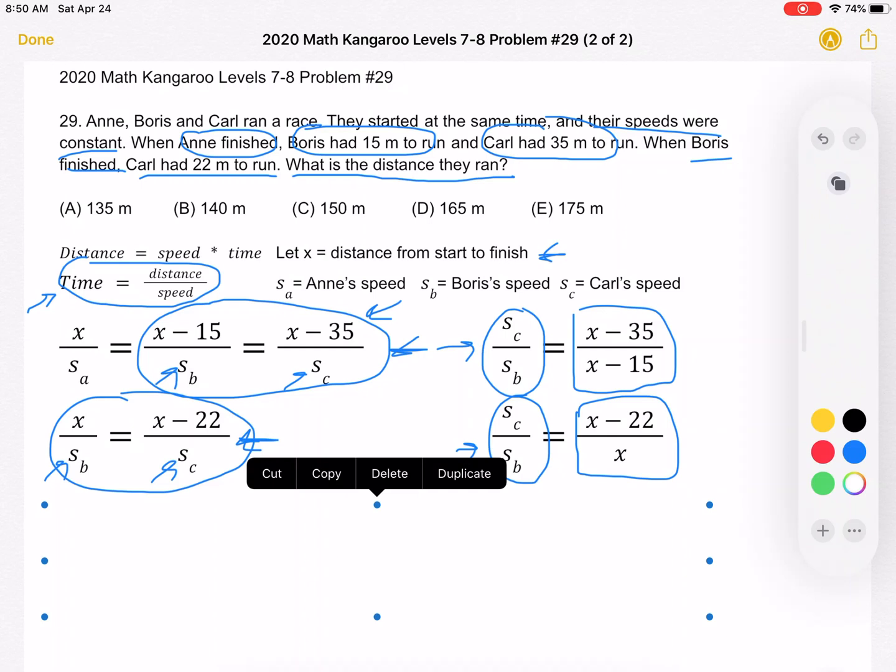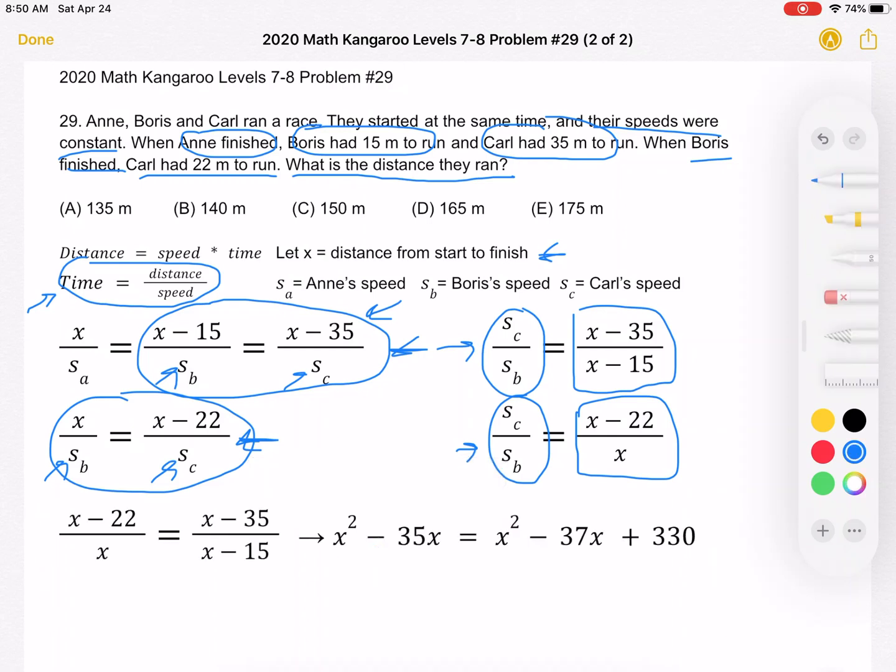So we just figured this out. And then from there, we can cross multiply to get x squared minus 35x equals x squared minus 37x plus 330. Now, these are nice numbers. We can subtract x squared from both sides, add over 37x to get that 2x equals 330. Dividing by 2 on both sides, we get that x must equal 165.